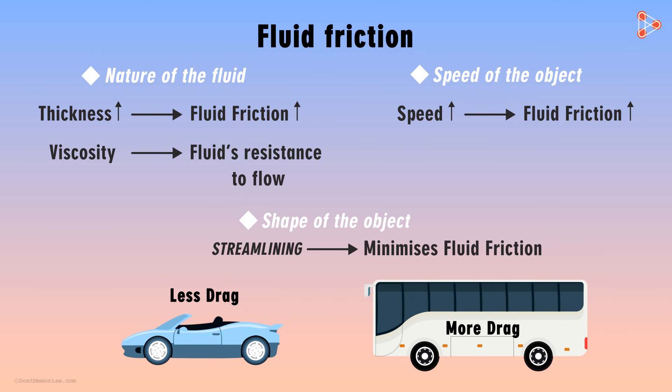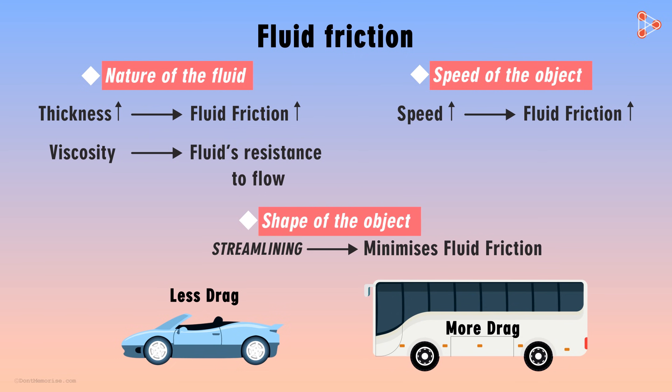So these were the different factors on which fluid friction depends: the nature of the fluid, the speed of the object moving through the fluid, and the shape of the object.